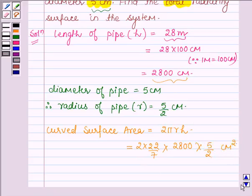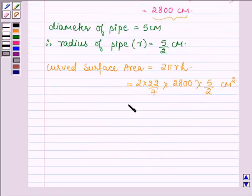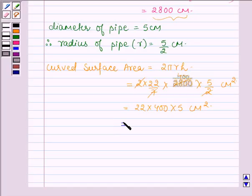The curved surface area is in square centimeters. Simplifying this, 2 cancels out with 2, so we have 22 into 400 into 5 centimeters square.